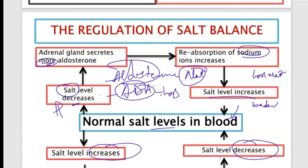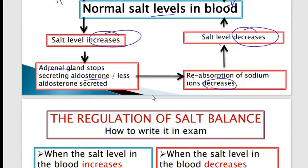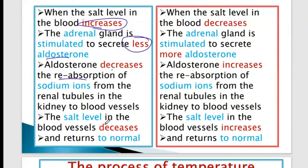So how do we write in exam? When the salt level in the blood increases, the adrenal gland will be stimulated. When stimulated, it's going to secrete less — produce less aldosterone. If less aldosterone is there, it means there will be less reabsorption, because there is too much salt. Less reabsorption occurs, meaning there will be a decrease in the salt concentration in the blood, and then it turns back to normal.